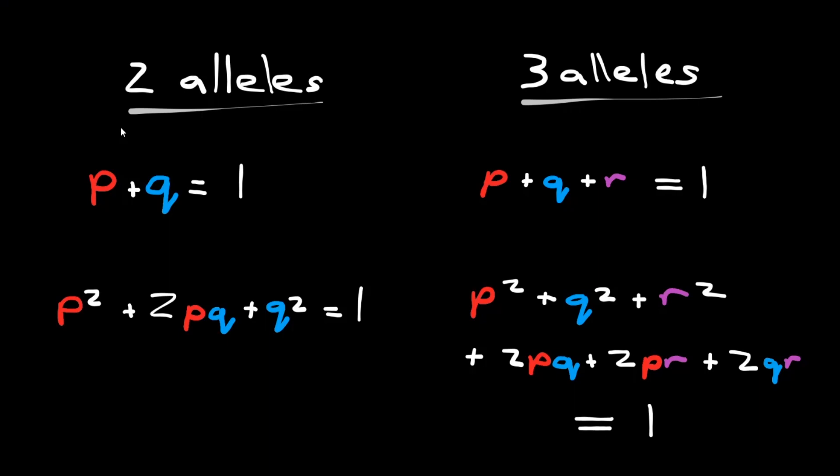Most of you have probably encountered Hardy-Weinberg equilibrium problems involving a gene with only two alleles, where this is the equation of the allele frequencies, and if you square this, you get the equation for the genotype frequencies. And there are three different genotypic combinations.